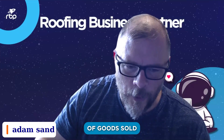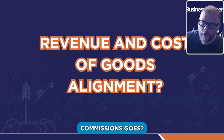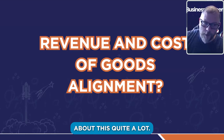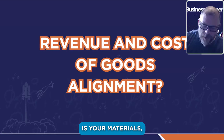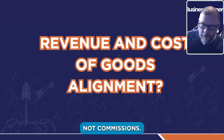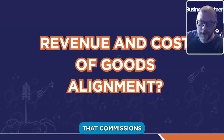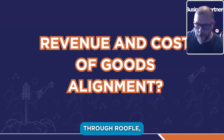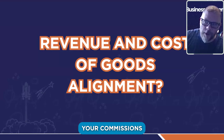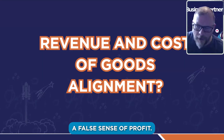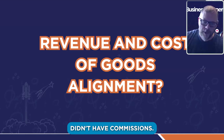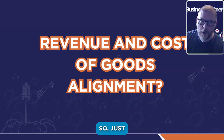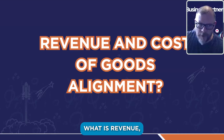Having clear alignment means asking: where does commissions go? If you pay a base rate to your sales people, does that go in cost of goods sold or below the line in overhead? People argue about this a lot. I personally believe cost of goods sold is materials, labor, permits, and dump — not commissions. If you bundle commissions into COGS, you'll have a false sense of profit. That's why I like commissions below the line — so you can see true job profitability.